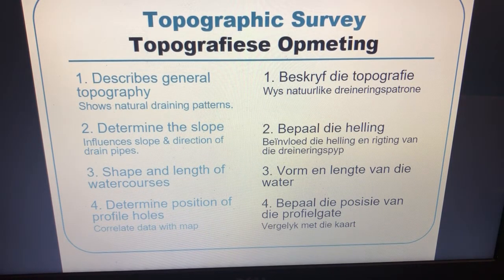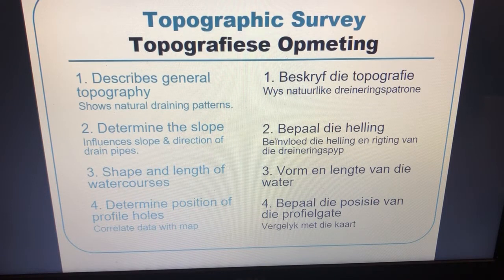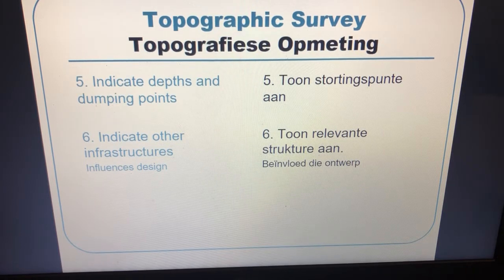The photos also help determine the position of profile holes. These are holes you dig in your land; from them you take a soil sample and examine the underlying soil conditions to understand why there might be a problem in a specific area. You also use the photos to indicate depths and dumping points, and other infrastructure in the field — like walls, planted crops, or big rocks — so you know where you cannot install drainage pipes.